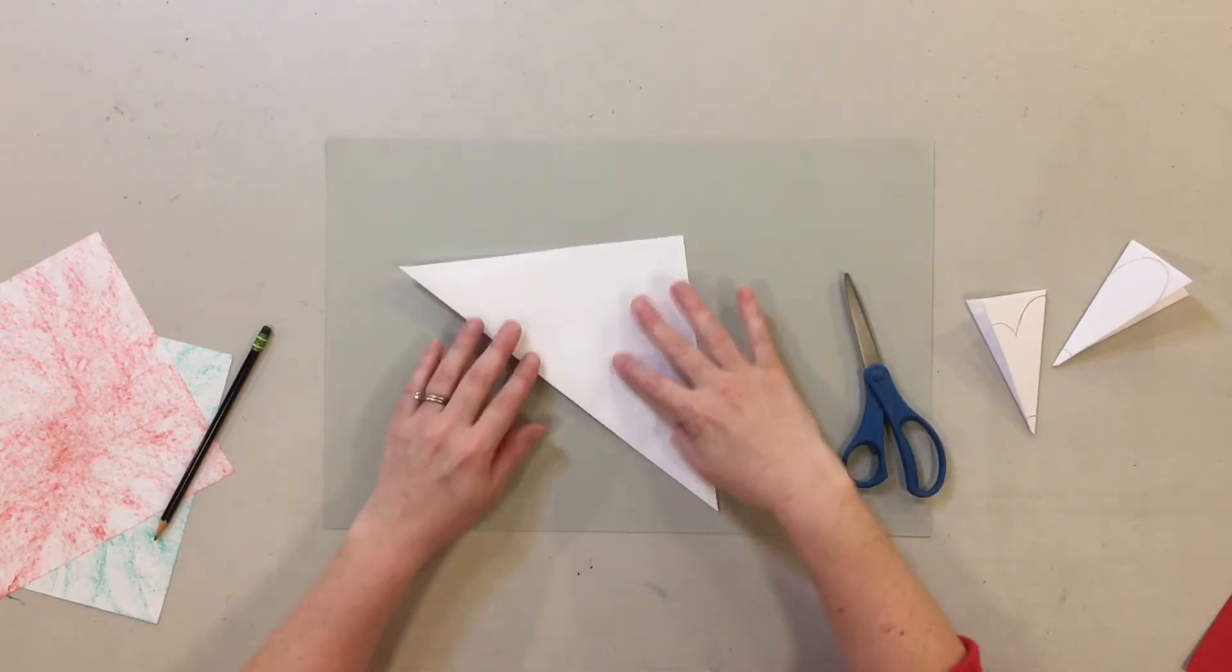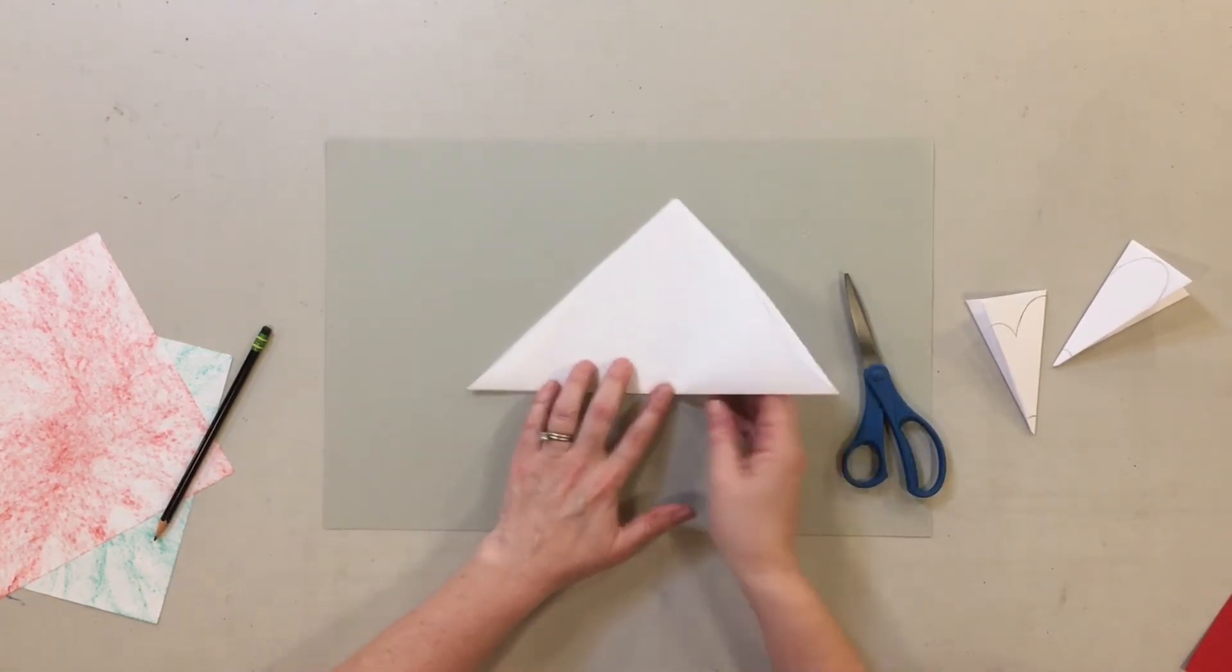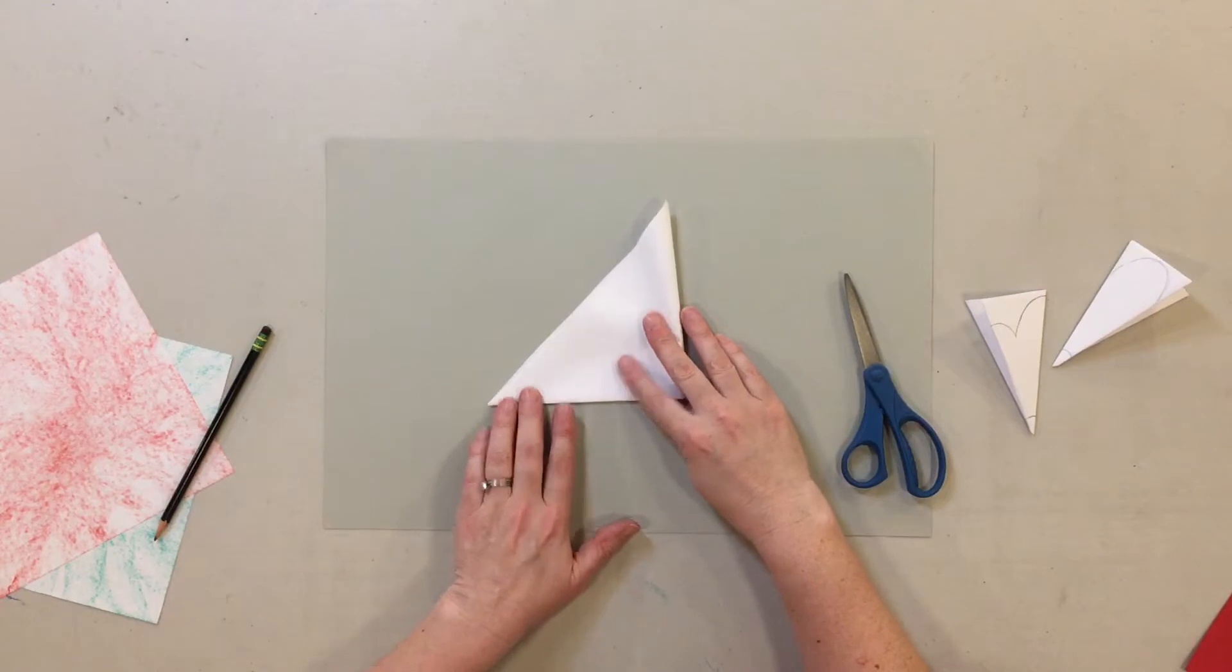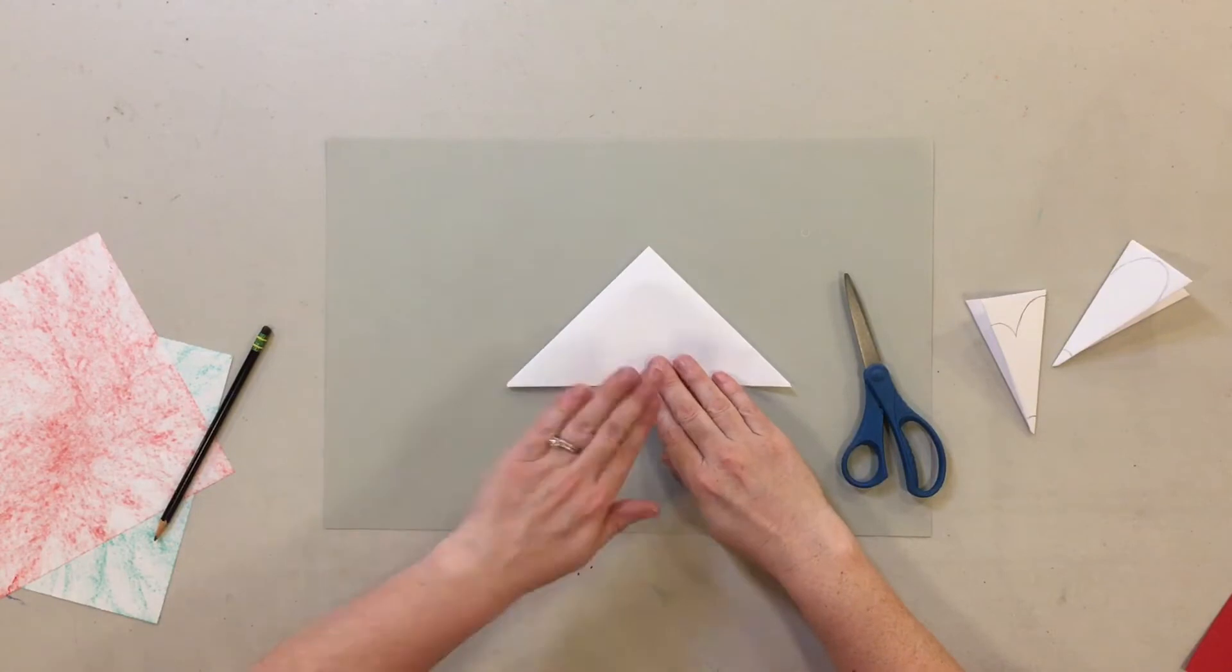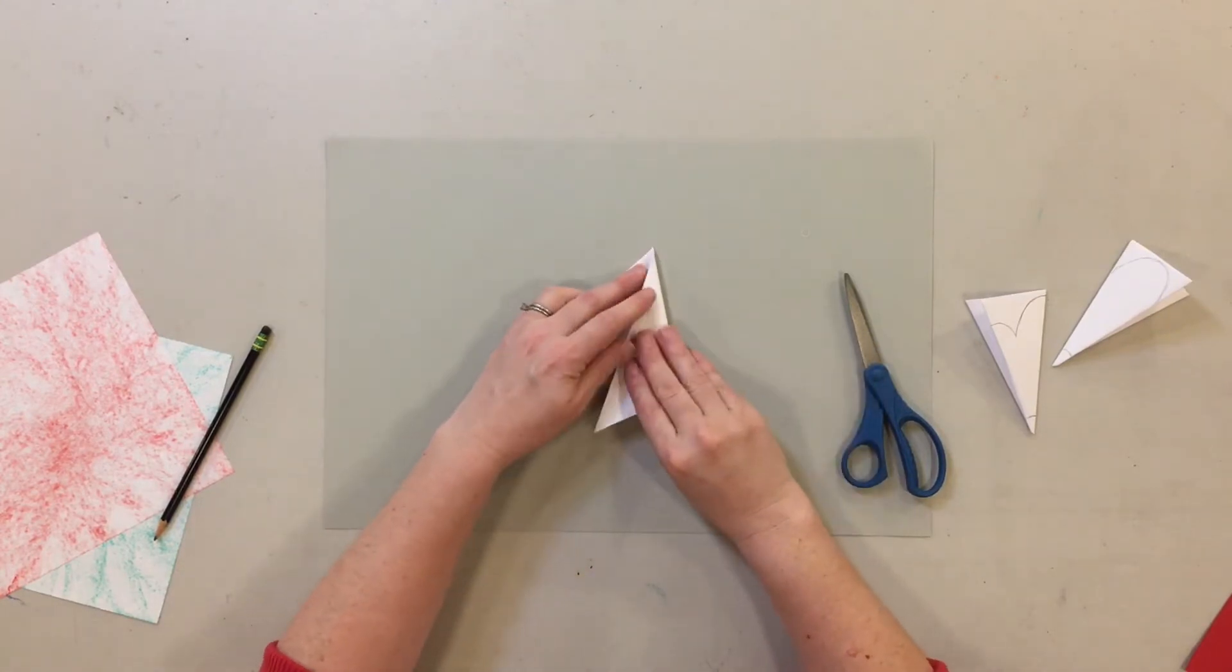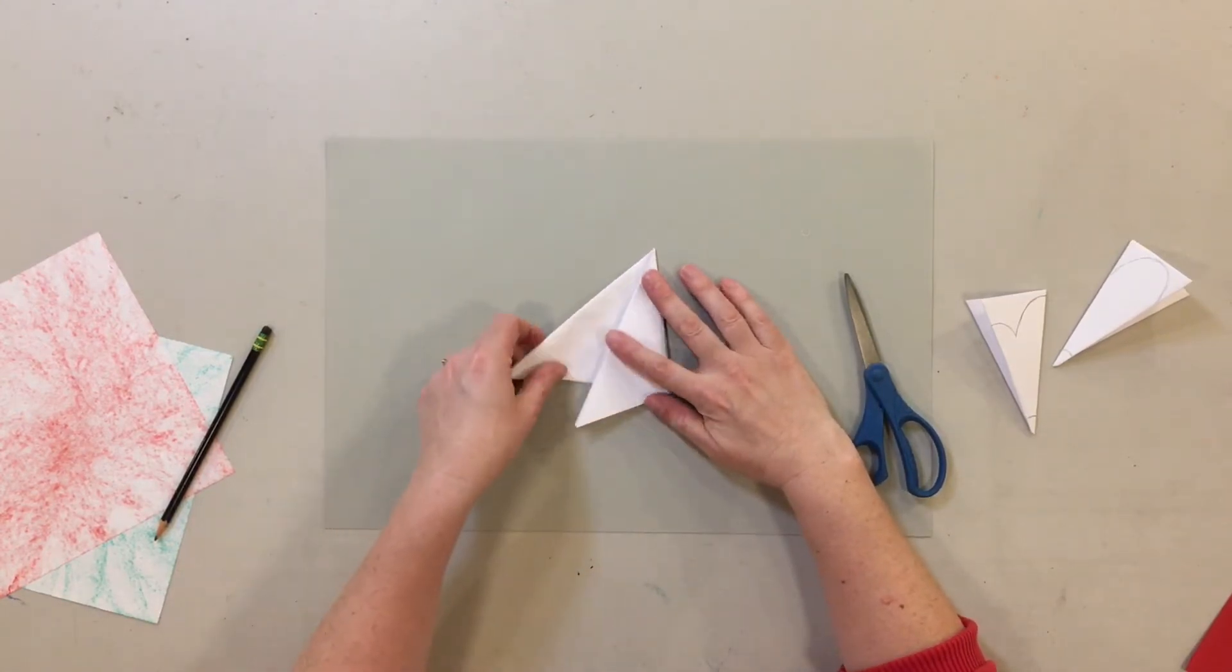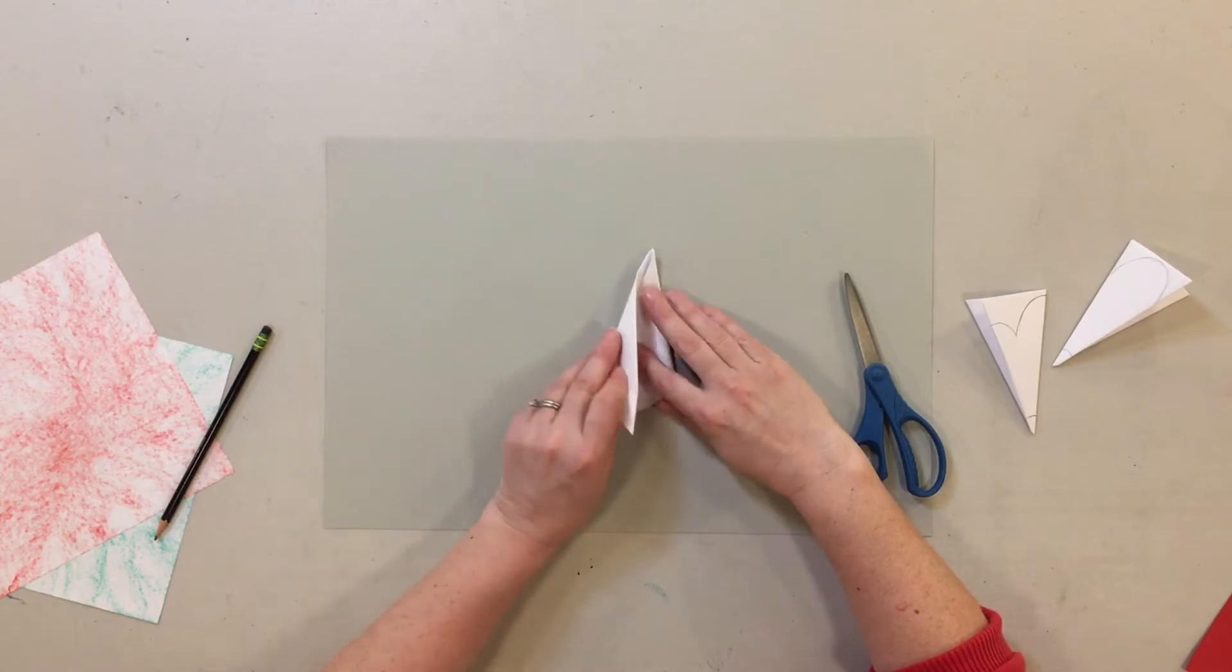So my square's folded in half diagonally, I'm putting the longest side on the bottom, and now I'm folding in half like a book, putting the longest side of the triangle on the bottom. Now I need to fold it in thirds, so I have to take each side and overlap them and try to make sure they're even.